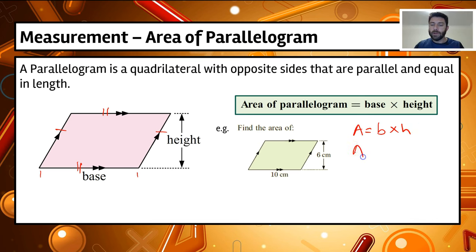Then we're going to substitute. So area equals 10 times 6. Area equals 60 centimeters squared.